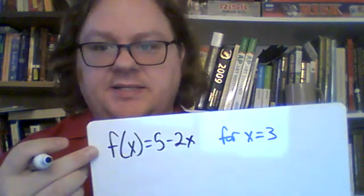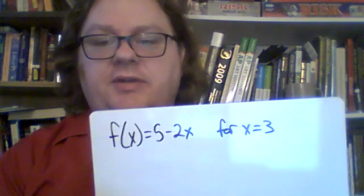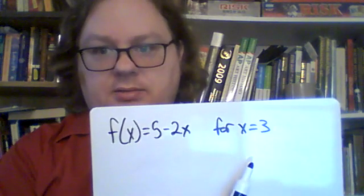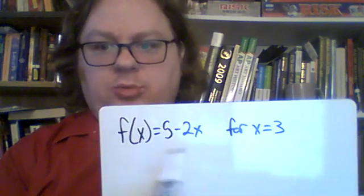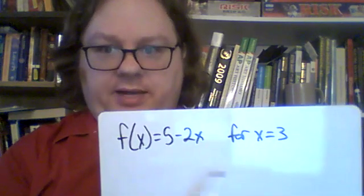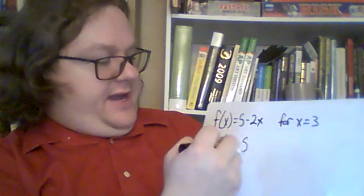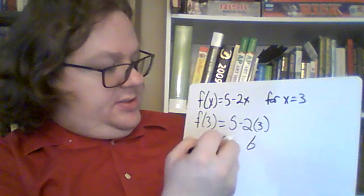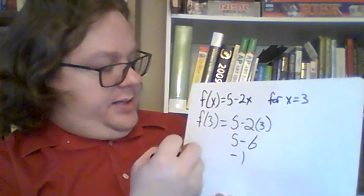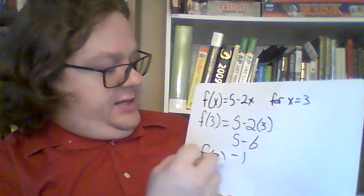Okay, next up we've got evaluating a function. So evaluating a function means solving it for a given number. For instance if they've given us this function f of x equals 5 minus 2x and they tell us to solve it for x equals 3, that means we're going to take the x's in here and replace them with 3. So that the function of 3 equals 5 minus 2 times 3. Right and then 2 times 3 is 6, 5 minus 6 is negative 1. So the function of 3 equals negative 1.